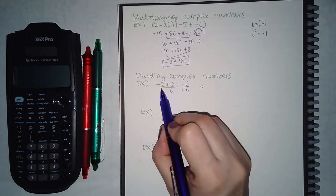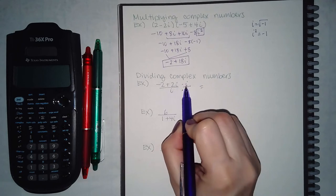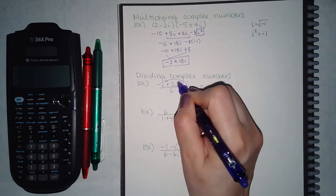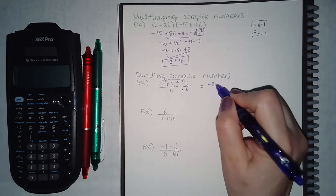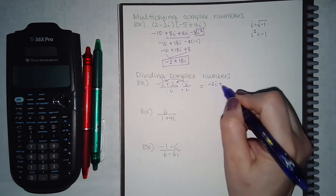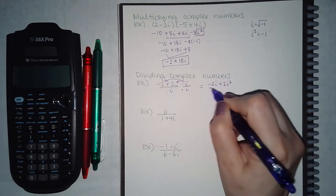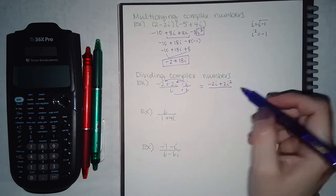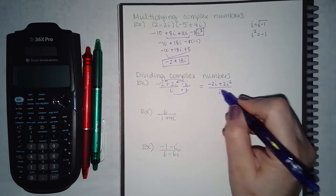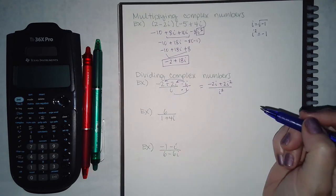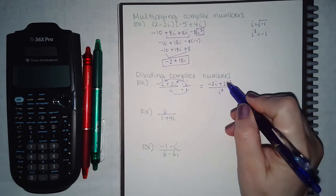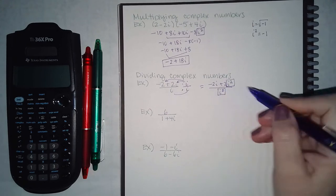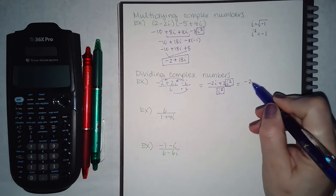On the top you have two terms times one term, so you have to distribute: I get negative 2i plus 2i squared. On the bottom you just have two monomials to multiply, which gives you i squared. Remember, i squared equals negative 1, so you cannot keep it in that form.